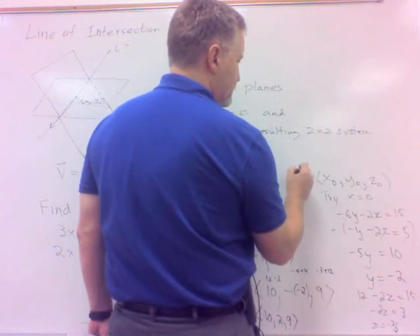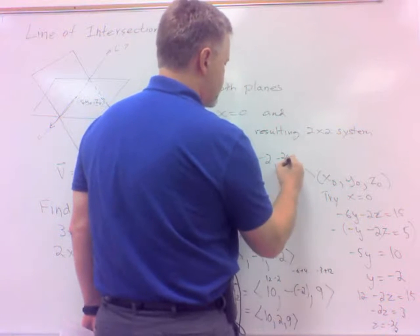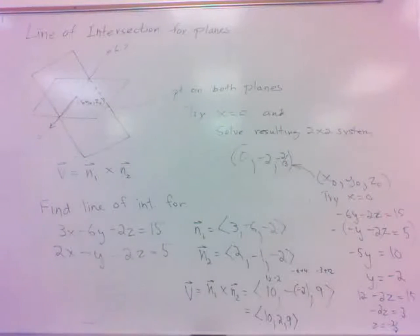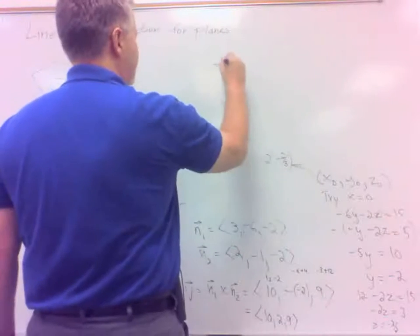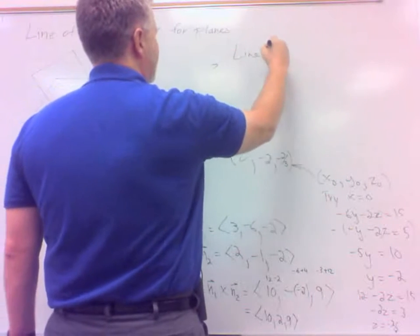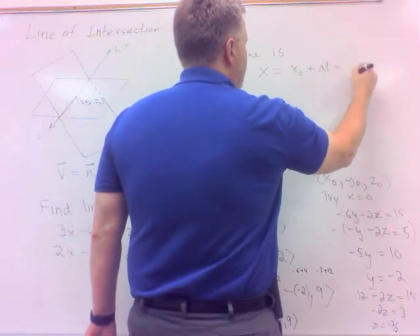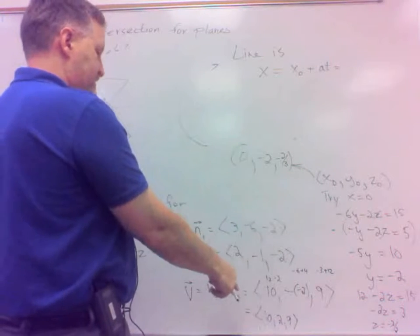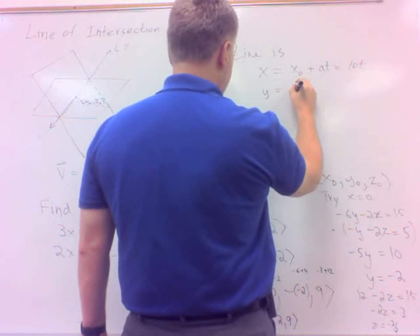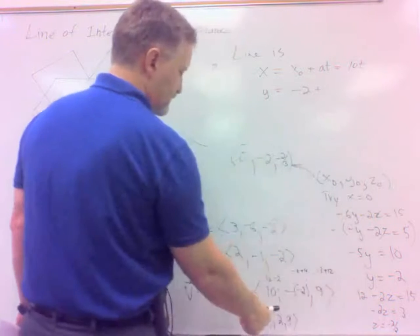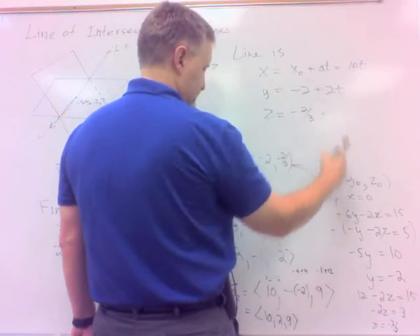And so our x0, y0, z0 would be x is 0, y is negative 2, and z is negative 2 thirds. Which means our line is in parametric form, x equals the x0 plus at, so that would be 0 plus 10t, that's just 10t. Y is the y0 plus bt, that would be negative 2 plus 2t. And then the z is z0, which is negative 2 thirds, plus ct, which is 9t.